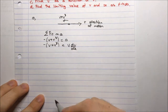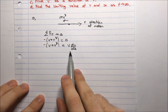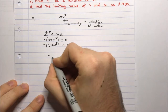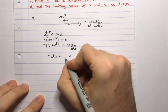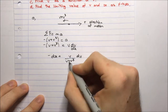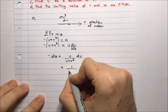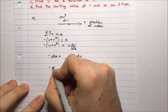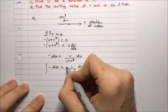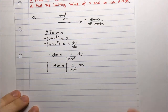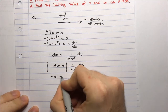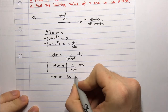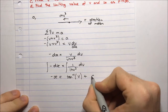Rearranging: bring dx up and v plus v cubed down to get negative dx equals v over (v plus v cubed) dv, which simplifies to 1 over (1 plus v squared) dv equals negative dx. Integrating both sides gives negative x equals arctan(v) plus a constant c.